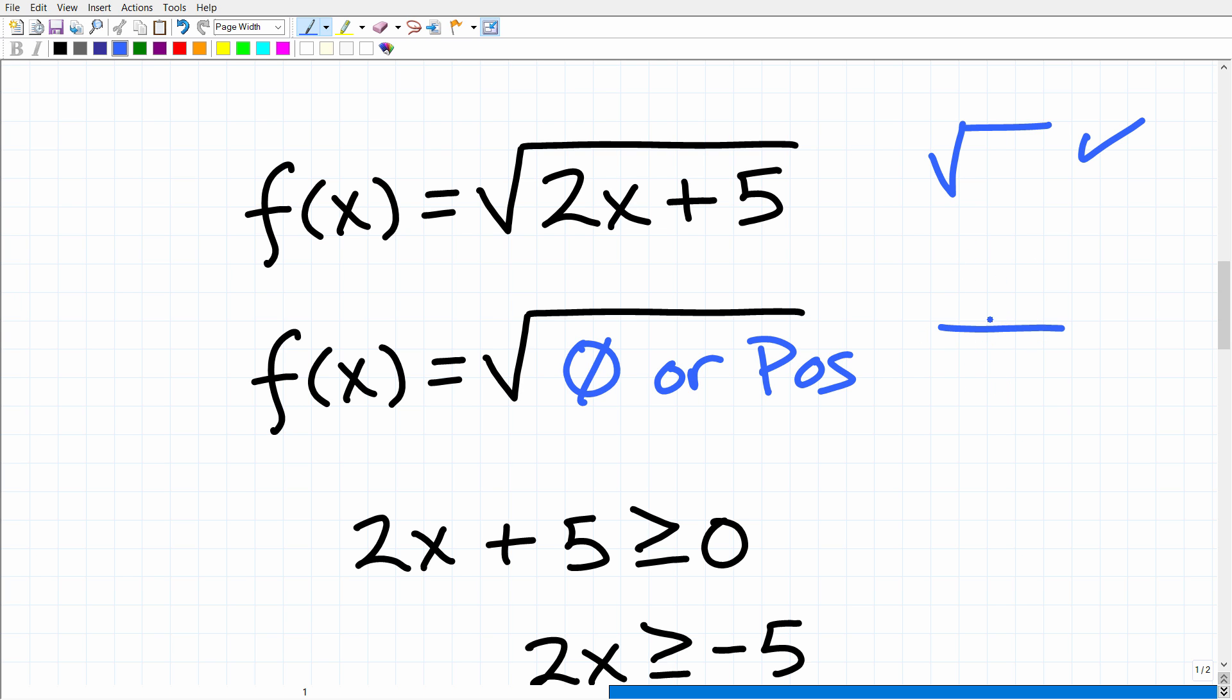And the second is a function where you have a fraction. Okay, so basically, when you have a function where there's a fraction, you can never have a situation where you end up with a zero in the denominator.